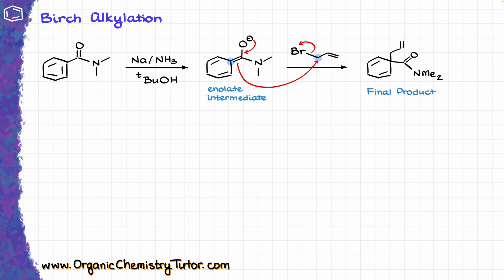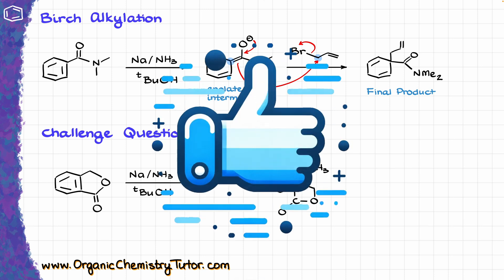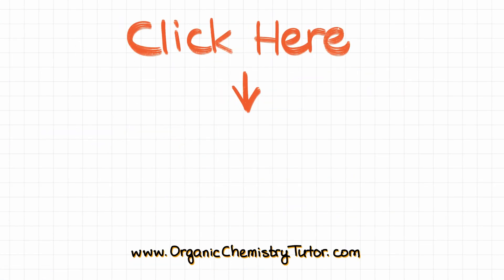With all this information in mind, I have a challenge question. Given this molecule performing a Birch reduction, and instead of acidic workup we do the reaction with dichloroethane, we end up with the following molecule — probably not the product you were thinking about. My challenge to you: can you come up with a reasonable mechanism to explain how that transformation happened? Let me know in the comments below. As always, thank you for watching — if you learned something new today, hit that like button and subscribe for more.